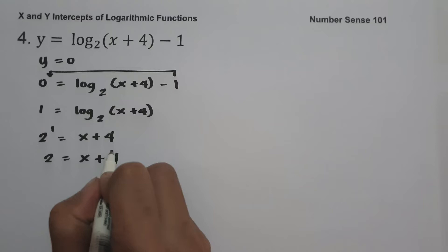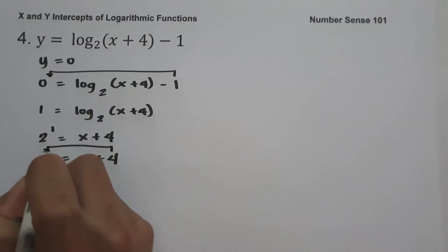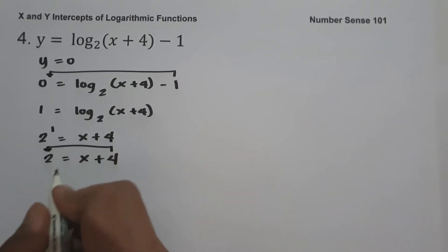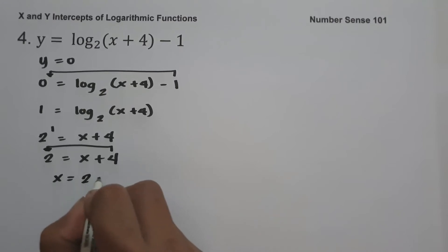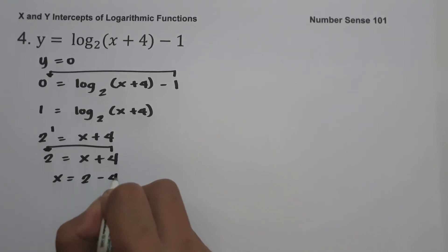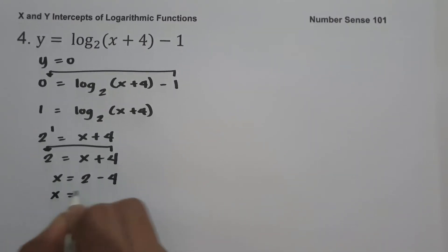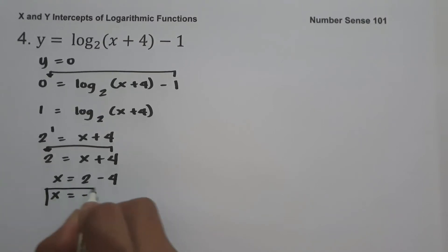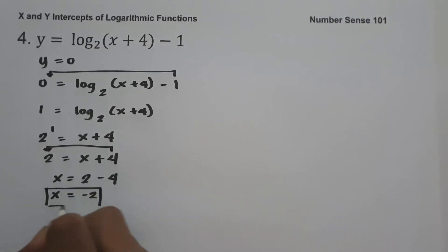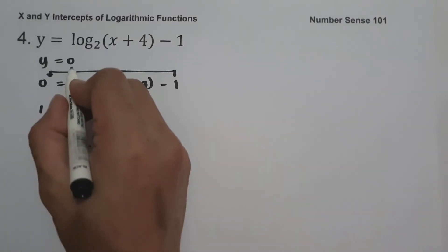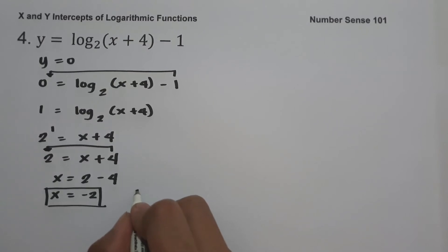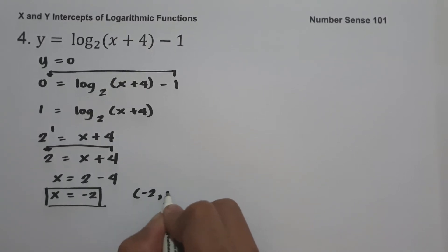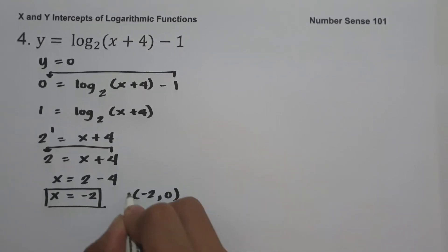Let us move 4 to the other side of the equation. It will give us x equals 2 minus 4, and 2 minus 4 is negative 2. Since the value of y is 0 and x is negative 2, our x-intercept is (−2, 0).